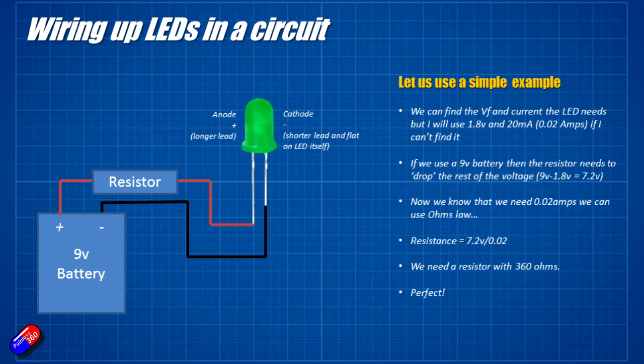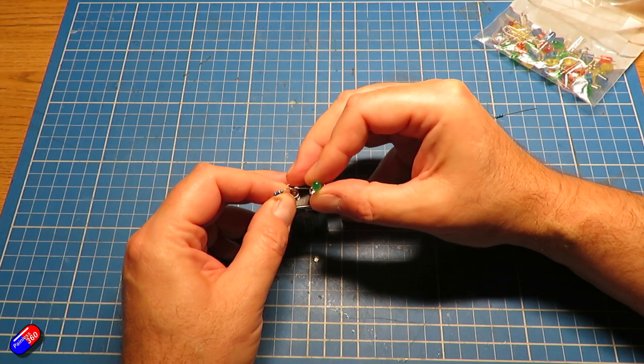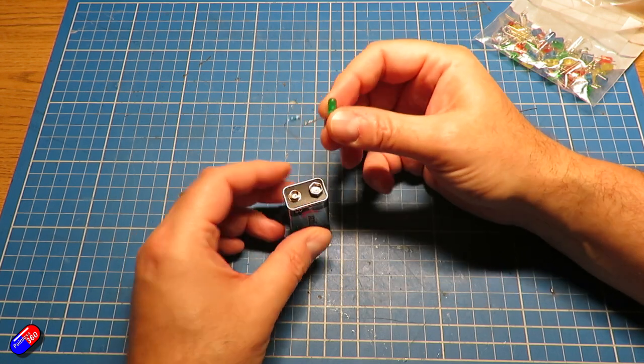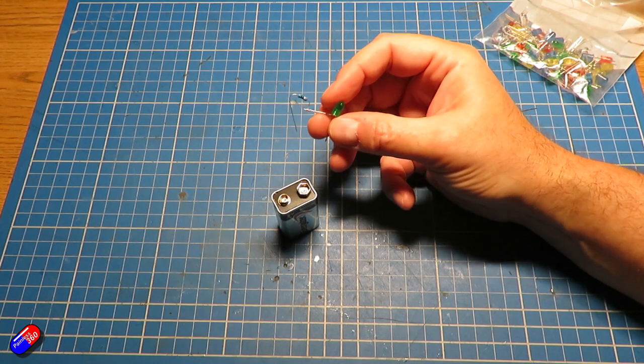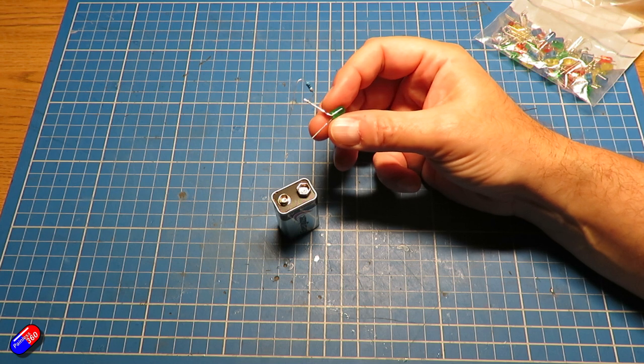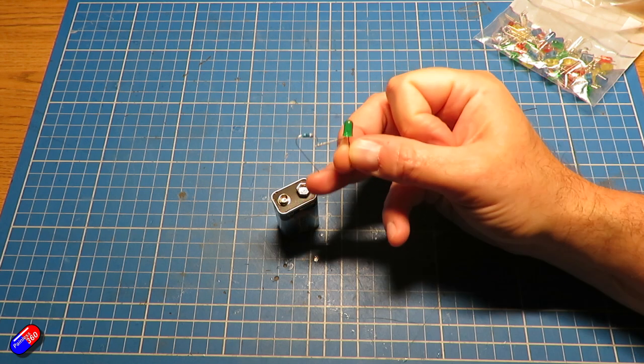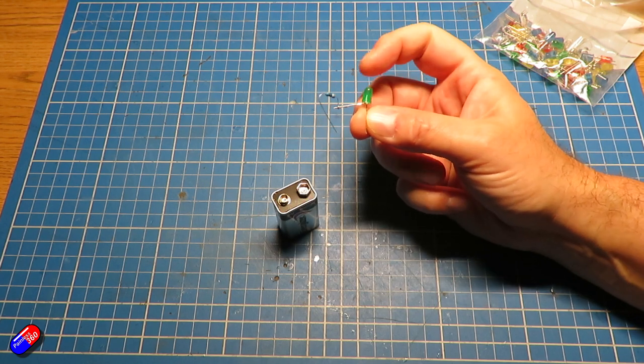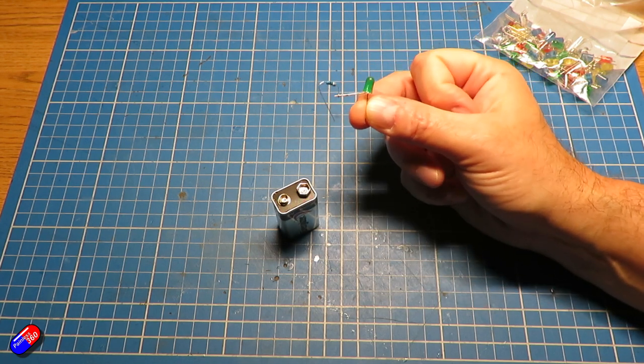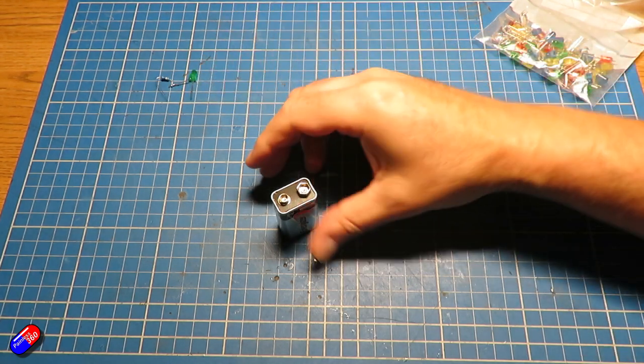Now that's great and that's the hardest bit of the whole video done. Now we've got that done, what about if we want to have more than one LED lighting up? Because the cool thing is of course is that we've got 9 volts to play with here and we only need 1.8 volts for each of these LEDs. So let's try that with two.